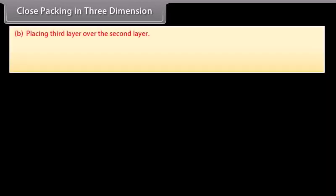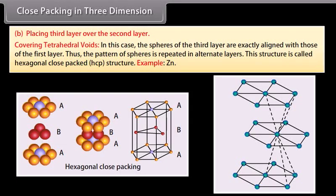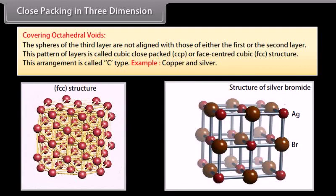When placing the third layer over the second layer, there are two possibilities. First, covering tetrahedral voids: the spheres of the third layer are exactly aligned with those of the first layer, and the pattern repeats in alternate layers — this is called the hexagonal close-packed (HCP) structure; example: Zinc. Second, covering octahedral voids: the spheres of the third layer are not aligned with either the first or second layer — this is called cubic close-packed (CCP) or face-centered cubic (FCC) structure; example: Copper and Silver.